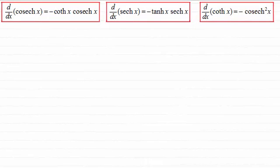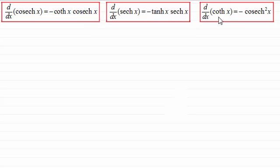Hi there. In this video what I want to do is show you how we can go about proving these results for the differential of cosech x, which is minus coth x cosech x, and the differential of sech x is minus tanh x sech x, and finally the differential of coth x is minus cosech squared x.